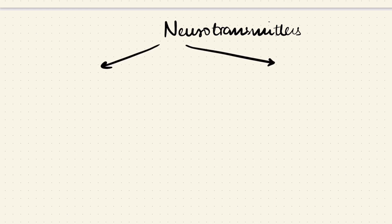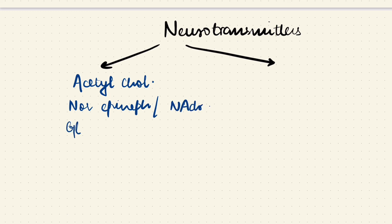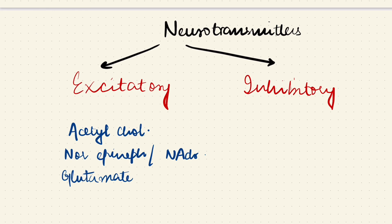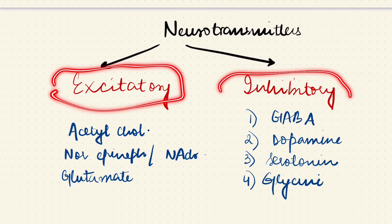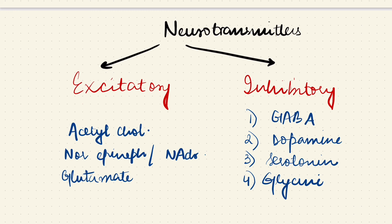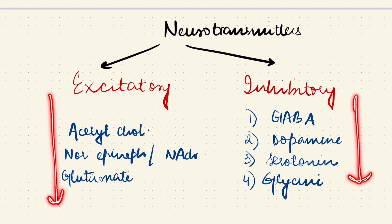Neurotransmitters can be excitatory or inhibitory. Excitatory neurotransmitters include acetylcholine, norepinephrine (noradrenaline), and glutamate. Inhibitory neurotransmitters include GABA (gamma-aminobutyric acid), dopamine, serotonin, and glycine. These respectively give rise to an excitatory potential or an inhibitory potential in the post-synaptic neuron.